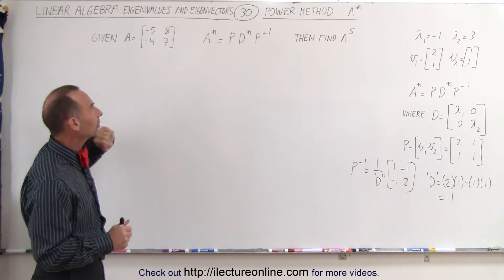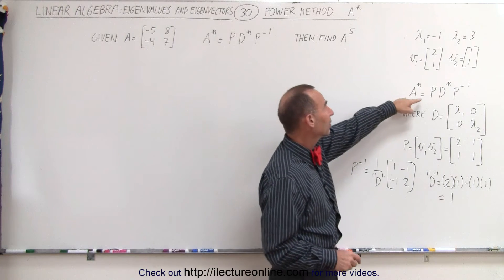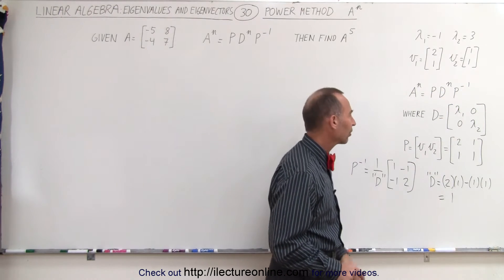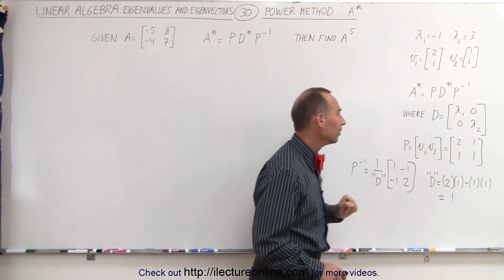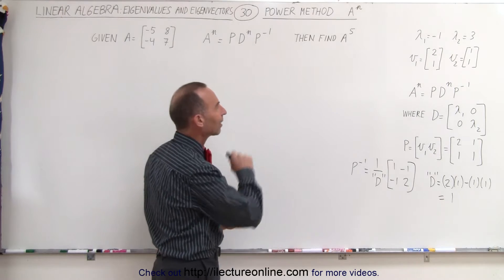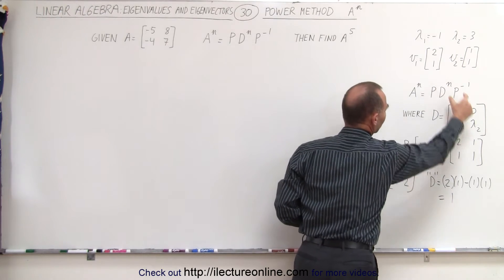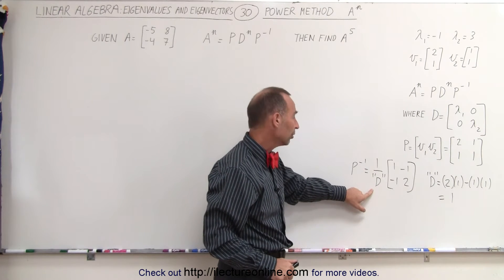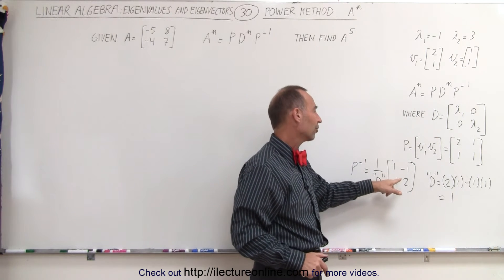We're going to set up an equation for this particular matrix and then find A to the 5th. Using the same principles, A to the nth is equal to the P matrix times the diagonalized matrix to the nth power times the inverse of the P matrix. The diagonalized matrix has eigenvalues along the diagonal and zeros everywhere else, and the eigenvalues and eigenvectors were calculated in previous videos. The P matrix is simply the eigenvectors. To find the inverse of the P matrix, it's 1 over the determinant, and that gives us the inverse matrix.